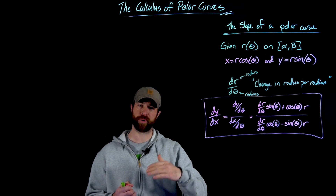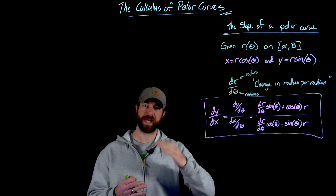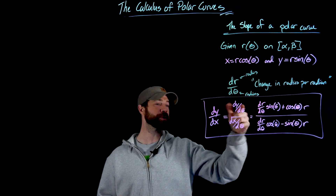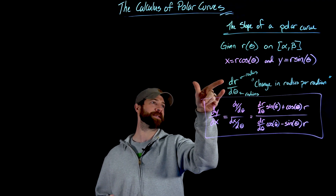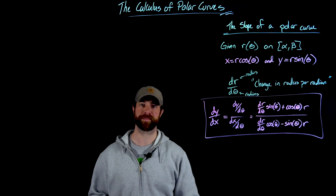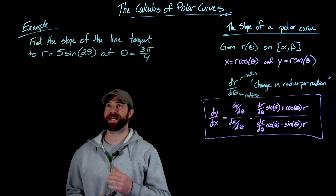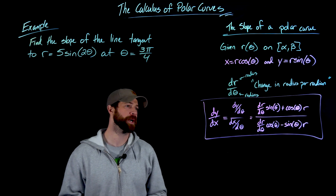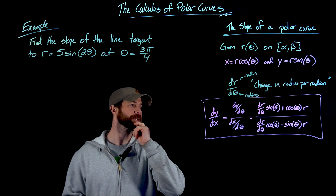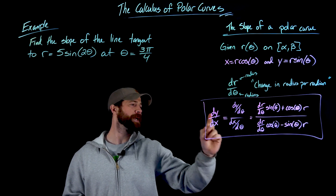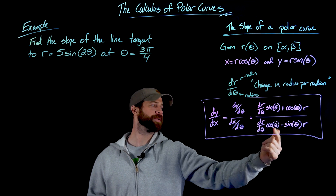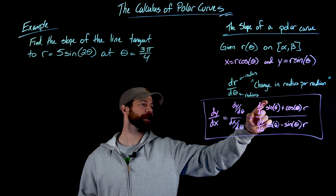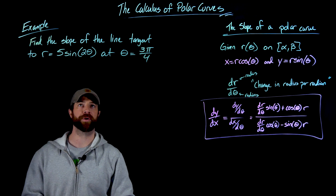Even though we're in polar coordinates, we want to describe slope with rise over run. dr/dθ is a legitimate derivative used in this formula, but it would not find the slope — it calculates the change in radius per radian. In this example, we're asked to find the slope of the line tangent to r = 5sin(2θ) at θ = 3π/4. We'll use this formula to find the slope. We need the theta values for sine and cosine evaluation, and we need to calculate dr/dθ and r.